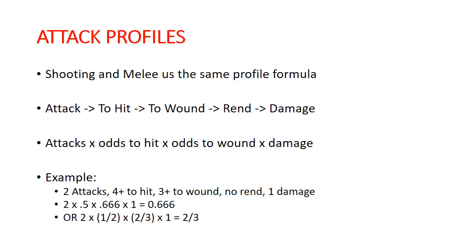The basic attack profile is going to be the same for shooting and melee. We have our number of attacks, our roll to hit, our roll to wound, our rend characteristic, and our damage characteristic. The basic equation for figuring out your damage output is: attacks × odds to hit × odds to wound × damage.